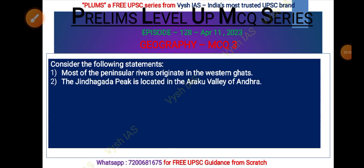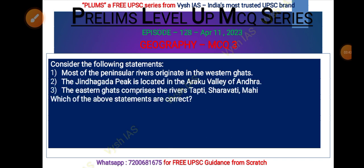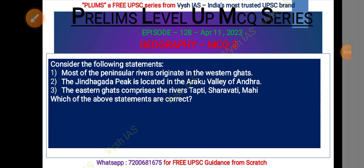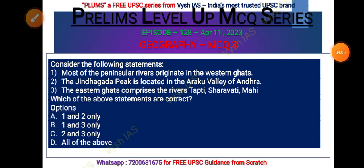The third MCQ: consider the following statements. Statement one: most of the peninsular rivers originate in the Western Ghats. Statement two: the Jindhagada peak is located in the Araku Valley of Andhra Pradesh. Statement three: the Eastern Ghats comprises the rivers Tapti, Shravati, and Mahi. Which of these statements are correct? Options: one and two only, one and three only, two and three only, or all of the above.